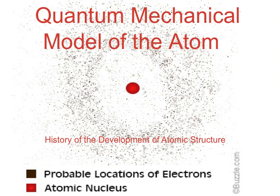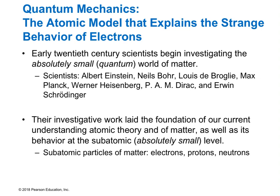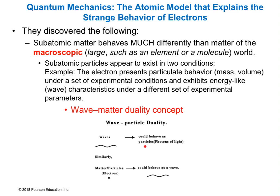This lecture will complete our summary of the quantum mechanical model of the atom. Several scientists contributed to it, but the key was really understanding more about the mysterious electron. In the early nineteen hundreds, scientists including Einstein, Bohr, de Broglie, Max Planck, Heisenberg, and Schrödinger all contributed really important pieces to understanding our current model of the atom and quantum mechanics in general.